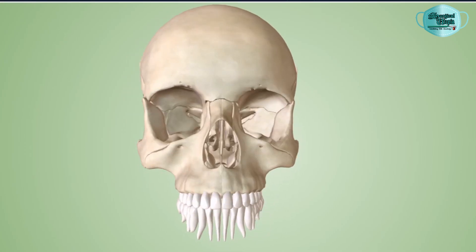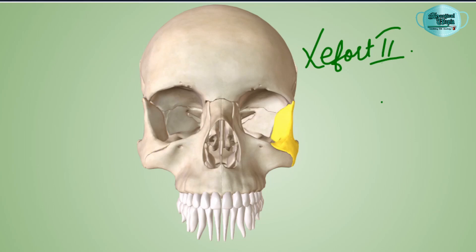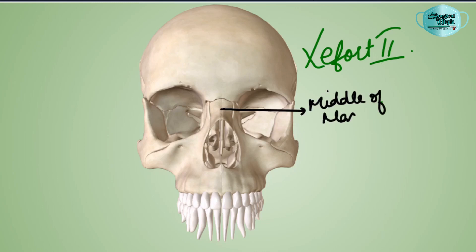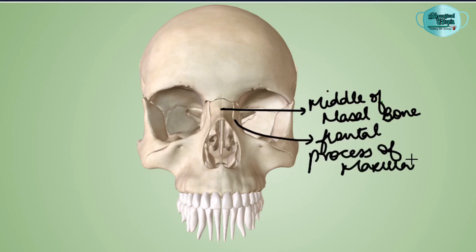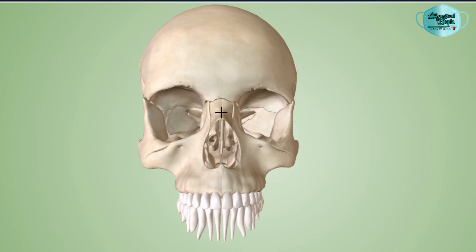Le Fort 2 fracture is also called the pyramidal fracture, and this is also a subzygomatic fracture — the fracture line extends below the zygomatic bone. In Le Fort 2, the fracture begins from the middle area of the nasal bone. The fracture will extend involving the frontal process of the maxilla and course downwards, bilaterally involving the frontal process of maxilla.